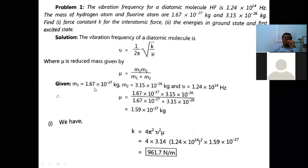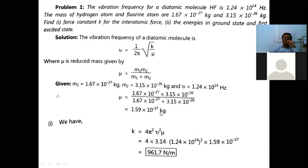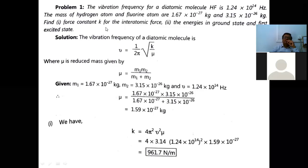Given: m1 = 1.67 × 10⁻²⁷ kg, m2 = 3.15 × 10⁻²⁶ kg, and frequency ν = 1.24 × 10¹⁴ Hz. Using m1 and m2, we calculate the reduced mass μ. Putting the values into μ = m1·m2/(m1 + m2), we get μ = 1.59 × 10⁻²⁷ kg.